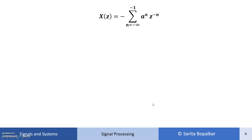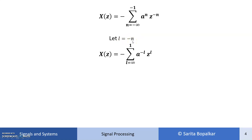So we can write X of Z as minus the summation where n varies from minus infinity to minus 1, of a raised to n times Z raised to minus n. Now let's change these limits from negative to positive by substituting l equal to minus n. When n is minus infinity, l is plus infinity, and when n is minus 1, l becomes plus 1. So the limits of l will be 1 to infinity.